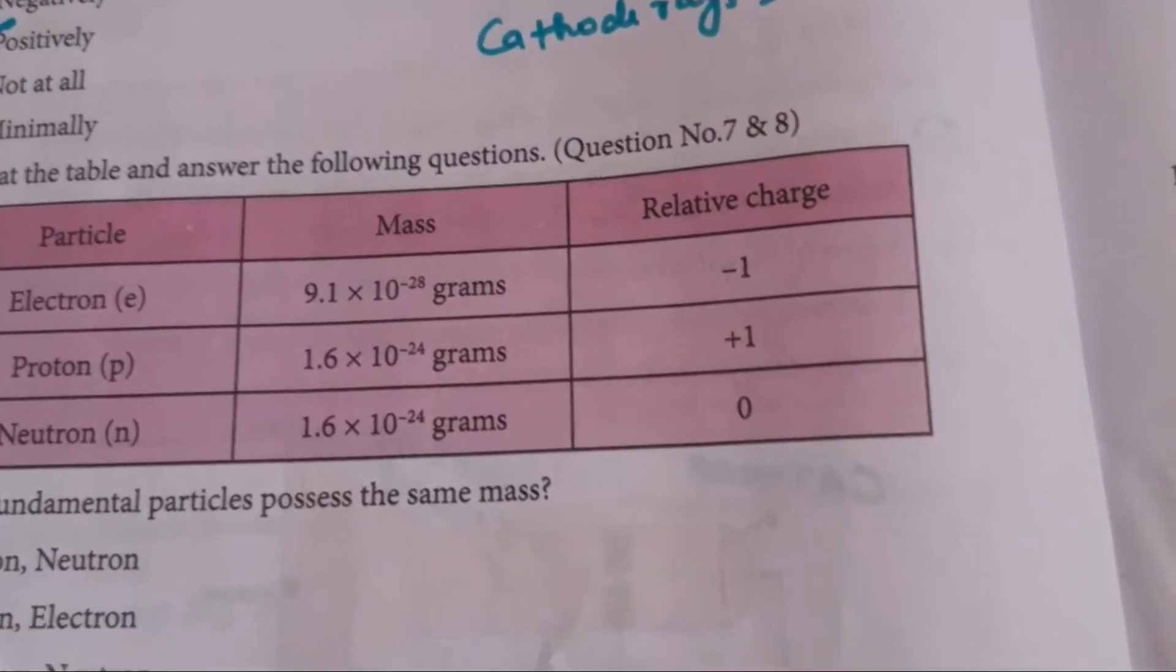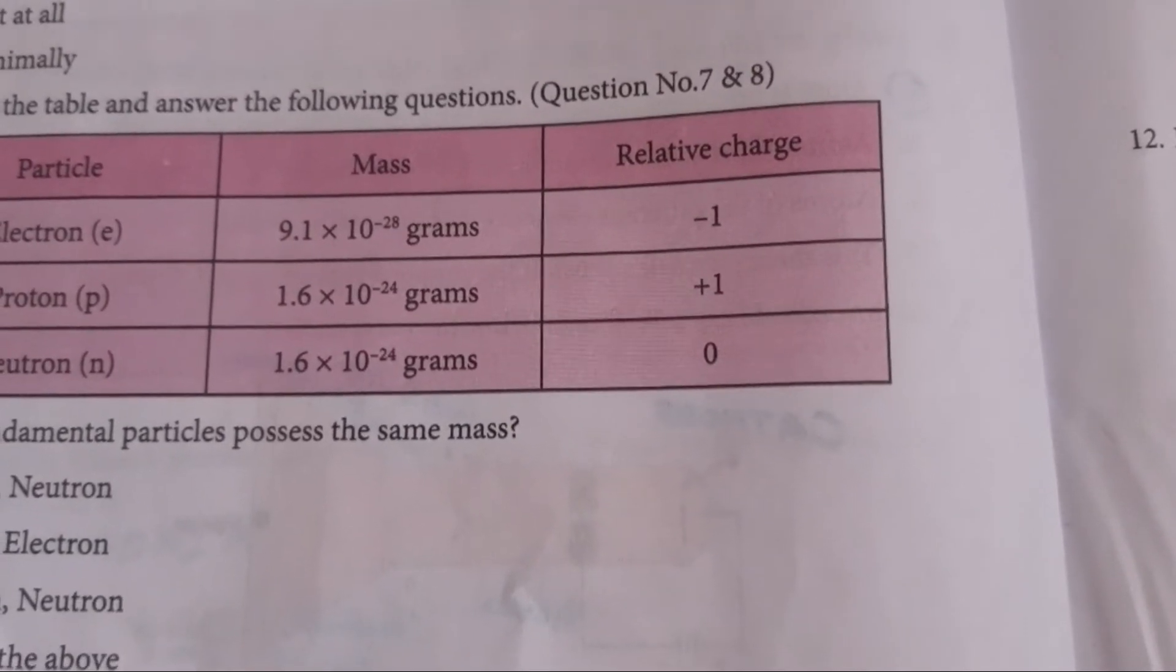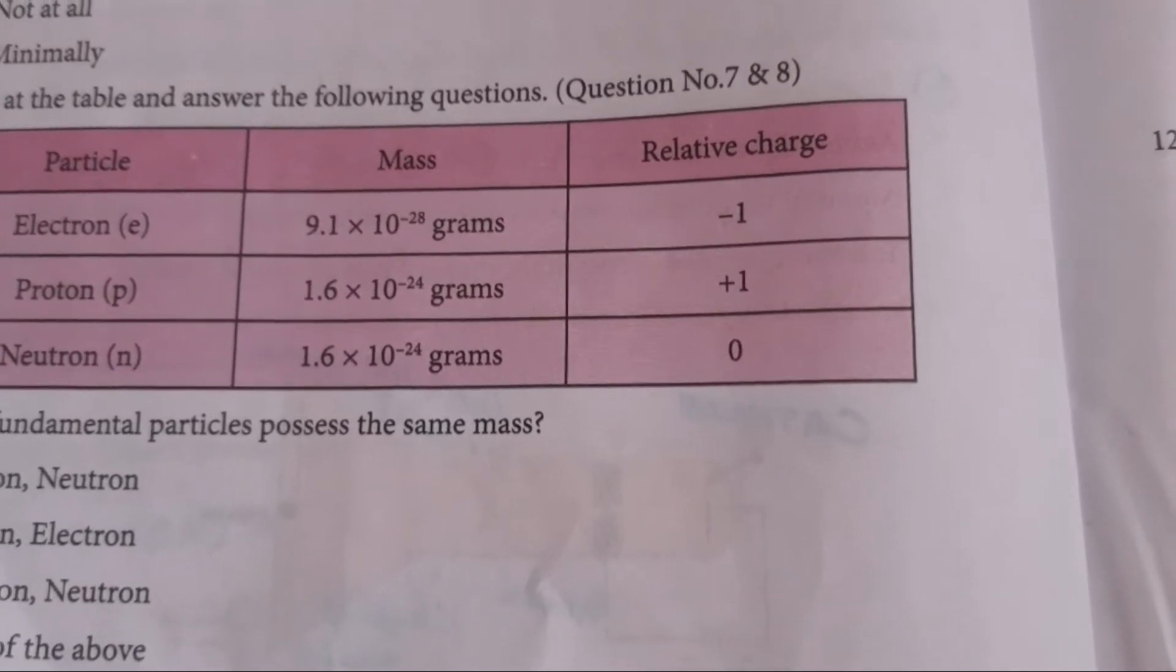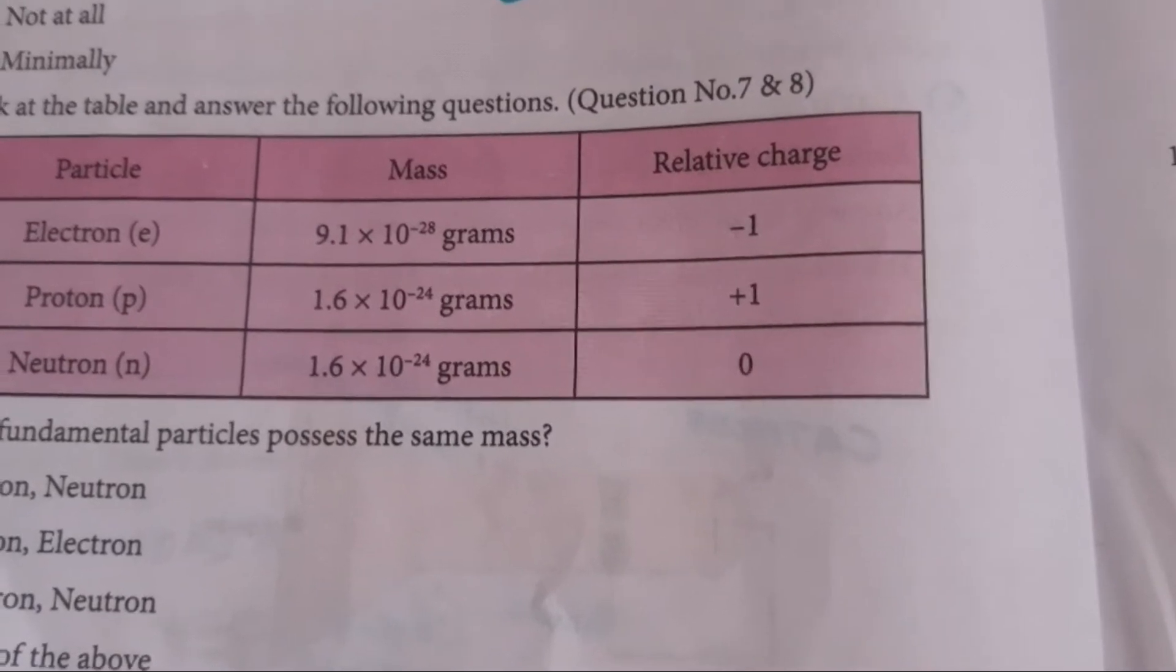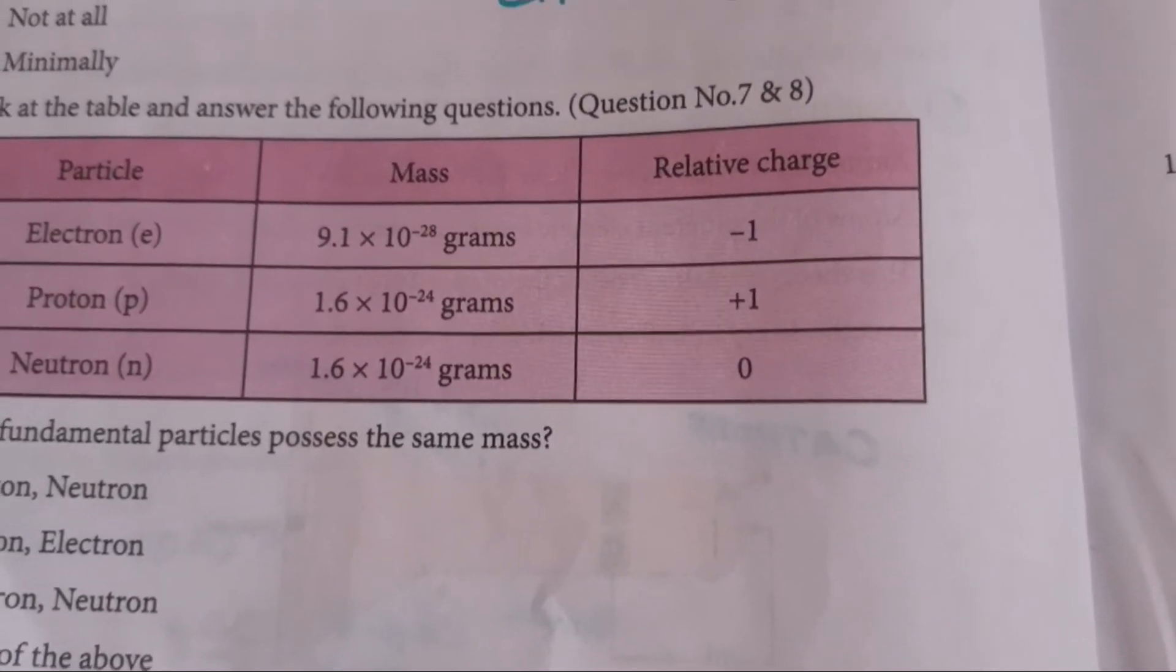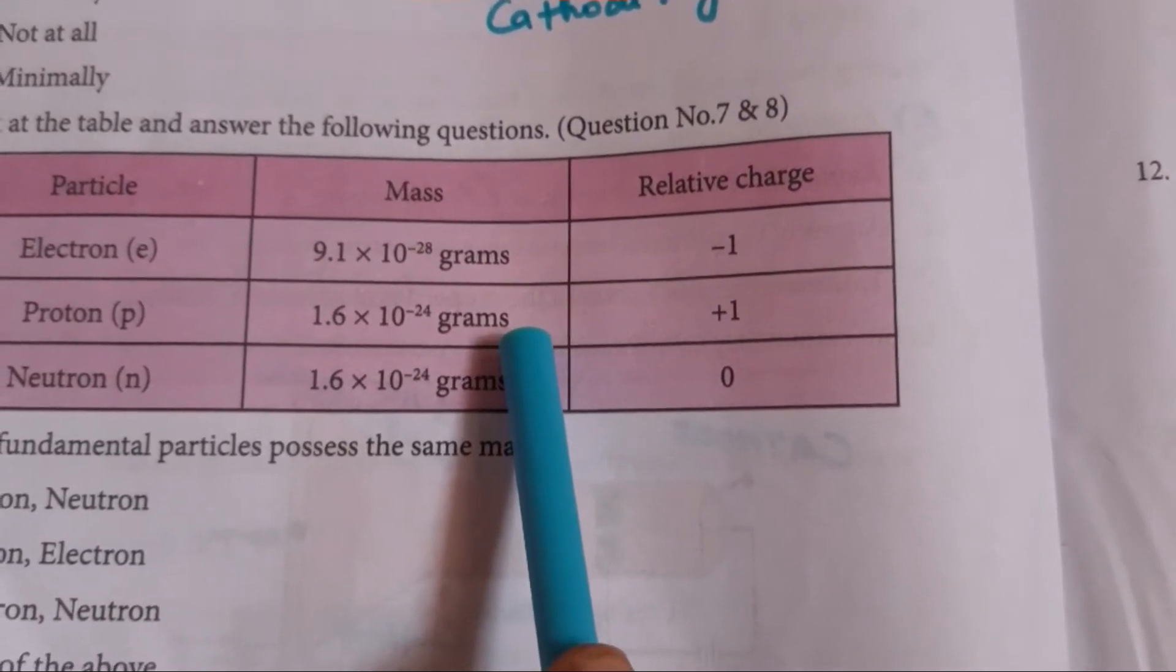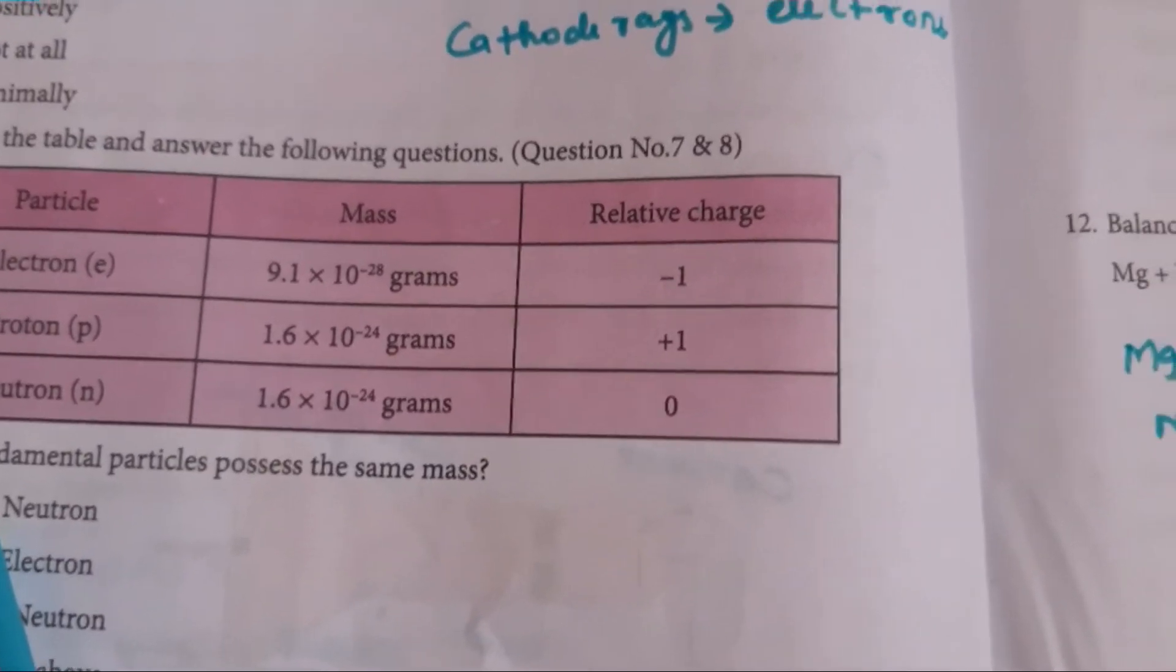And then, look at the table and answer the following questions. So the table is given. And then, which fundamental particles possess the same mass? So from this, it is easy. Proton and neutron which has same mass value. 1.6 into 10 power minus 24 grams. And here also the same. So the answer is A. Proton and neutron.